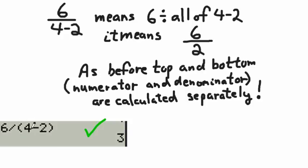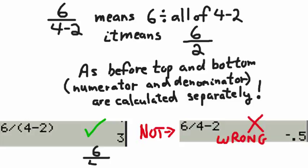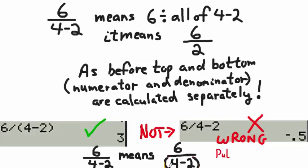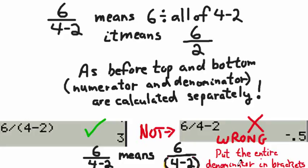When you put it in the calculator, you have to tell it that the entire bottom is the divisor or denominator. If you don't do that, you'll get the wrong answer. Notice — if you leave out the brackets, you're going to get the wrong answer. So 6 divided by all of 4 minus 2 means you calculate 4 minus 2 first before dividing. Put the entire denominator in brackets unless it's just a single number. Anytime there's an expression in the bottom, put the entire top and bottom in brackets.